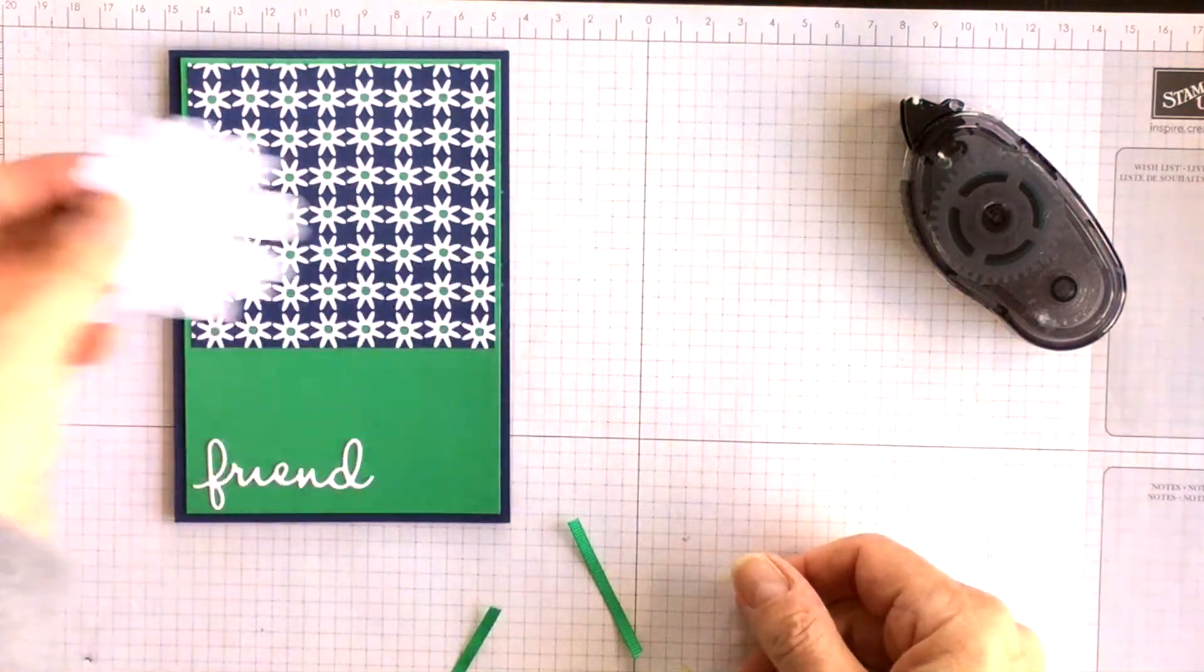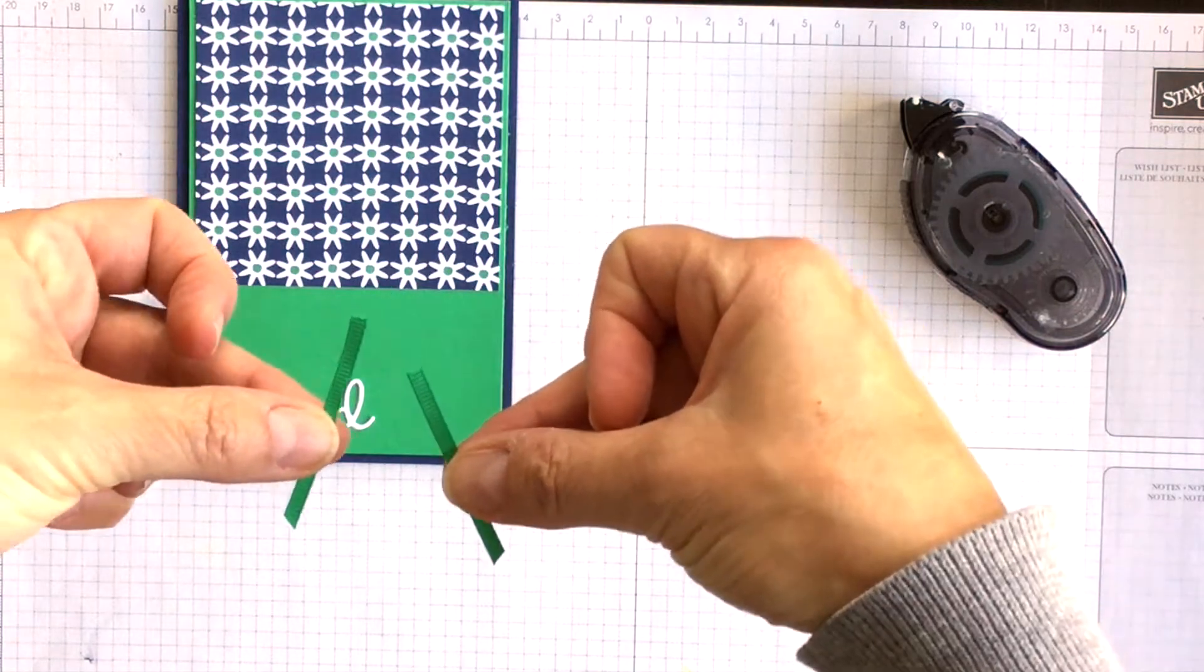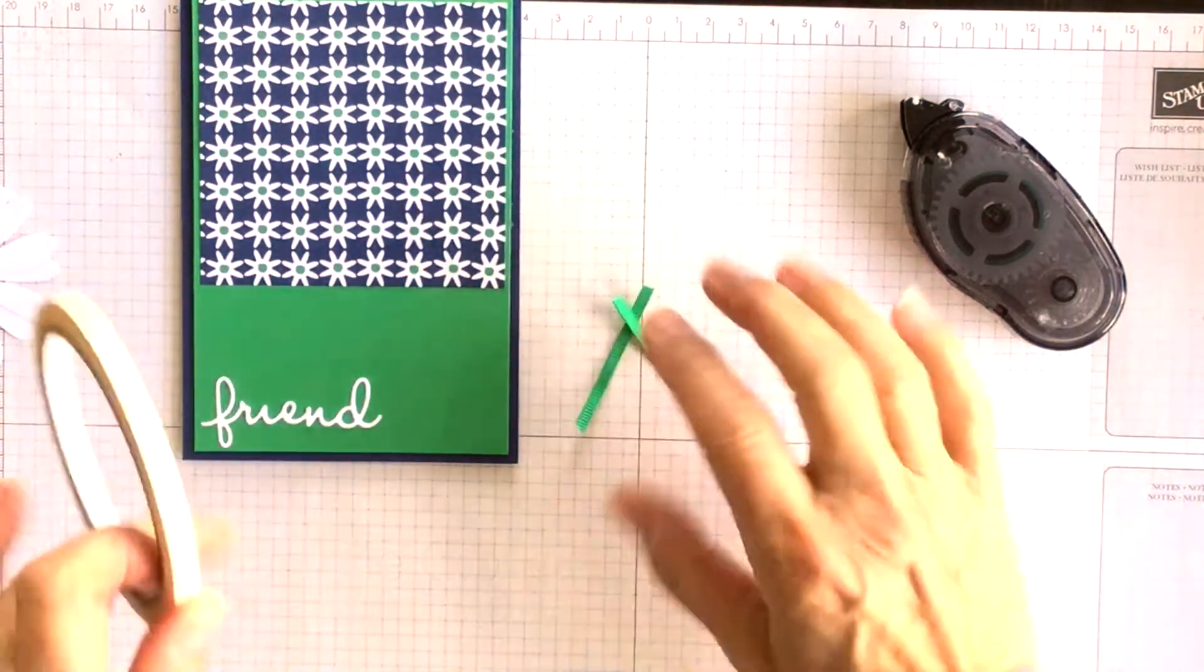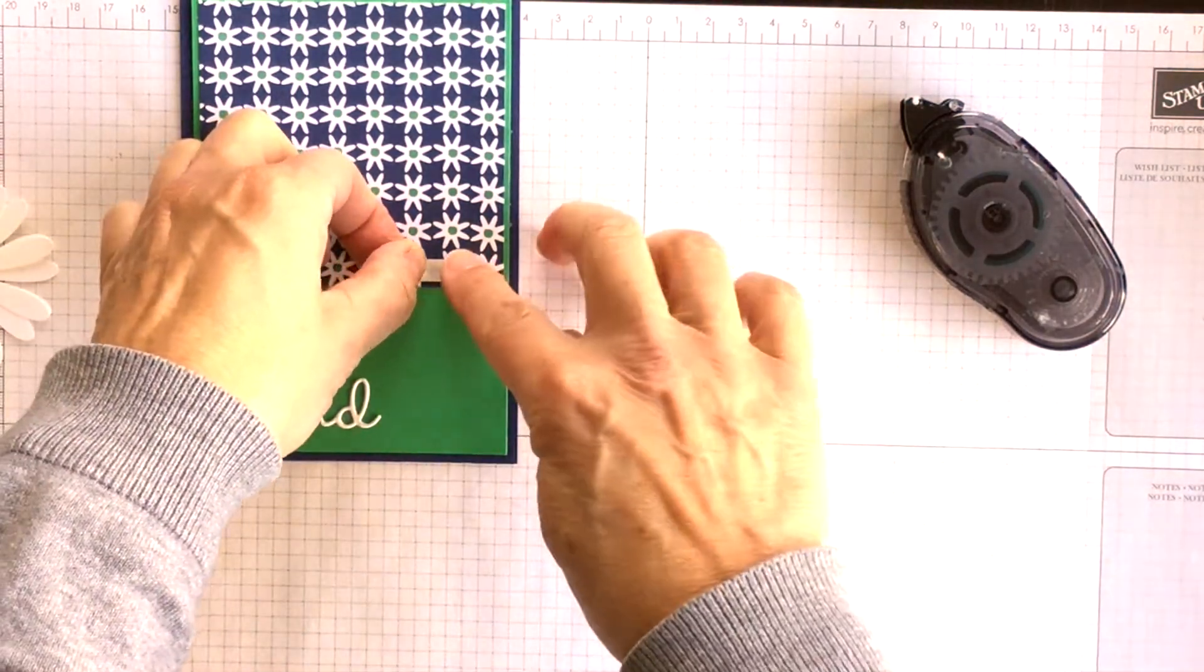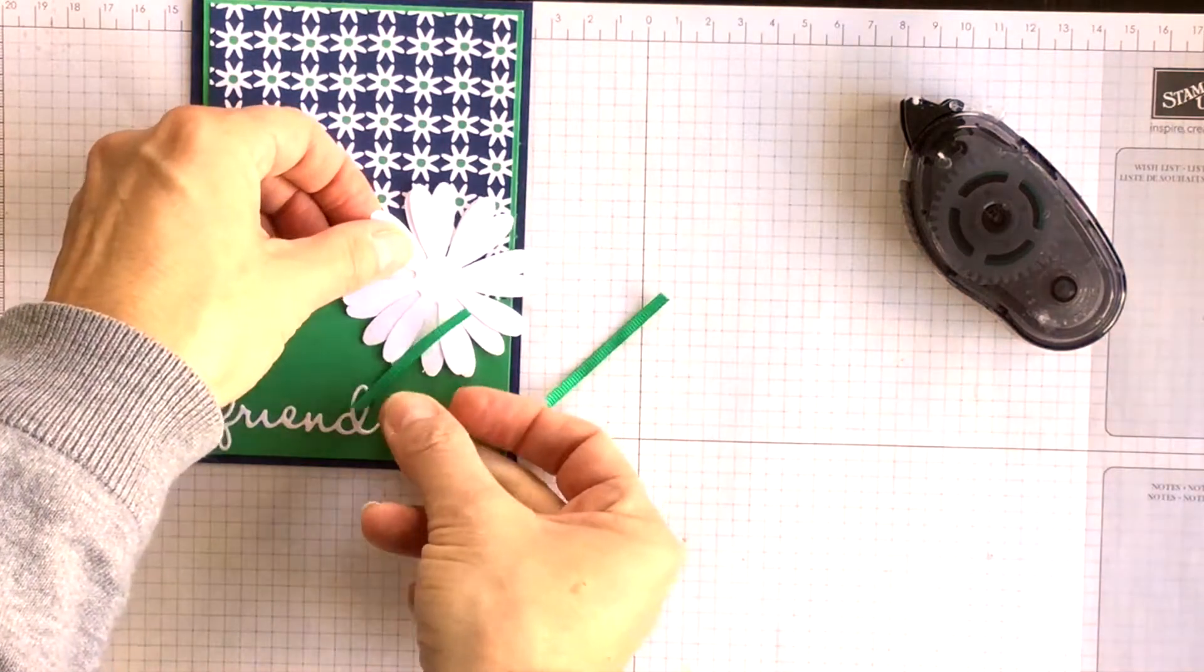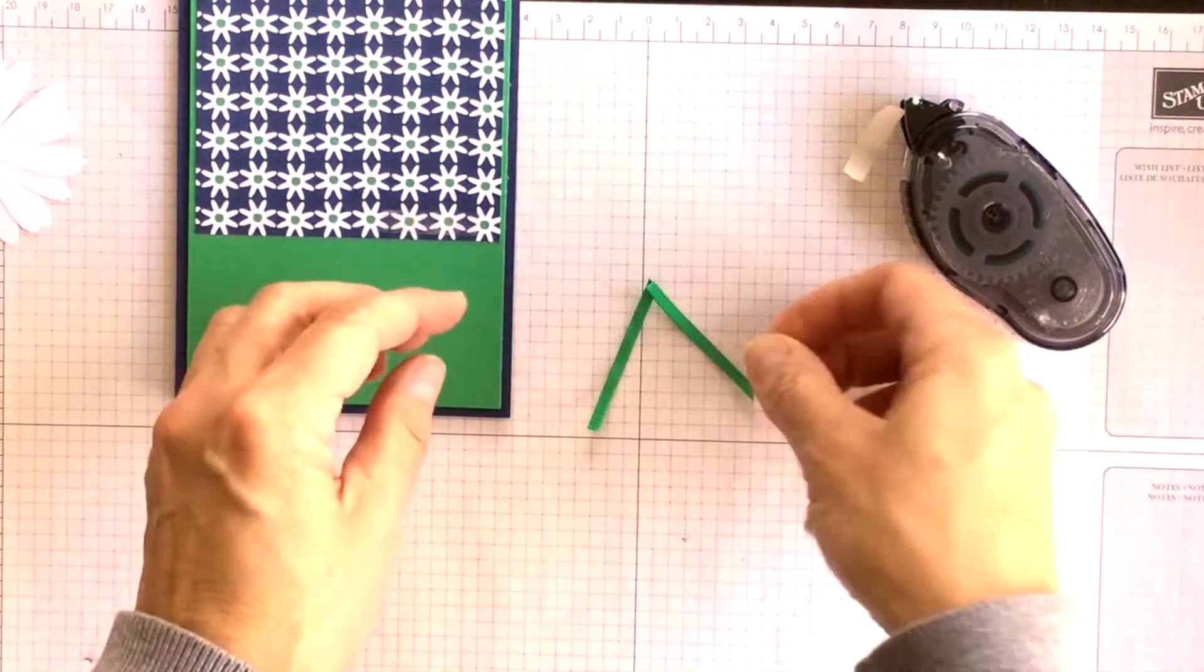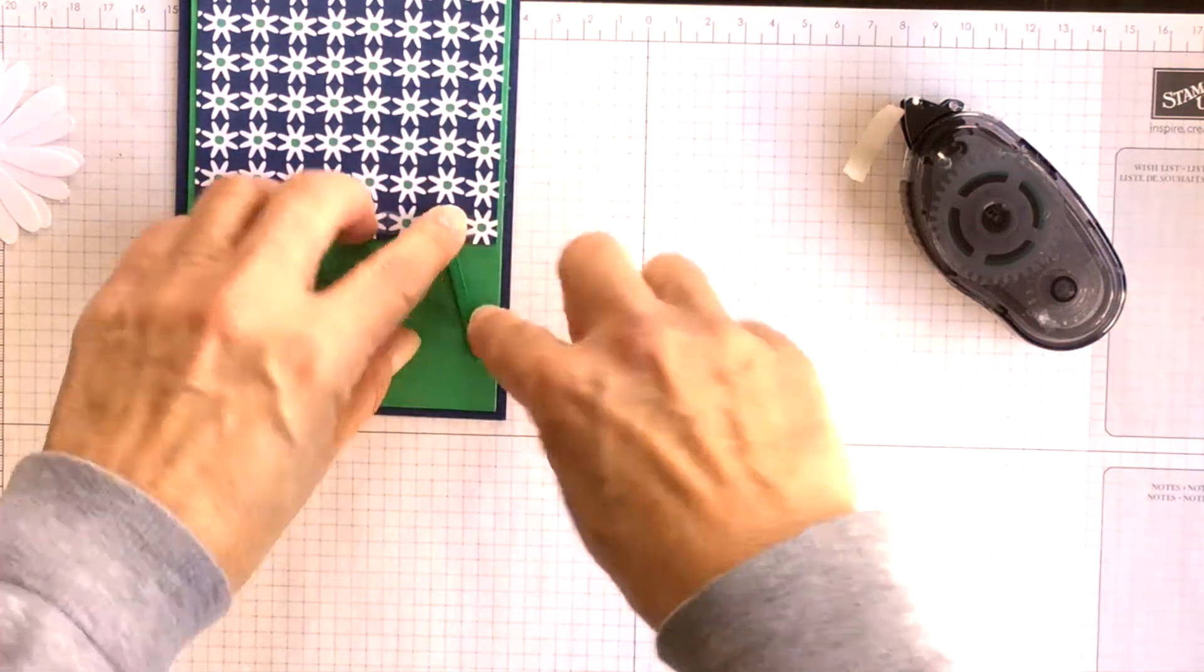So I'm going to set my daisies aside for just a second and then I have two tiny pieces of the Call Me Clover ribbon and I want to add these to my card front next. I'm going to use a piece of tear and tape adhesive and I'll tear off the front cover of that and I'm going to have one piece of ribbon that way.